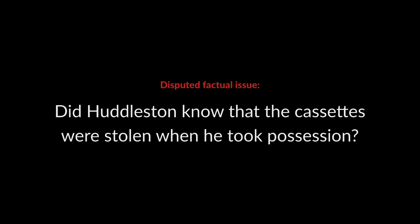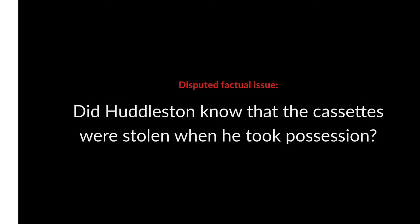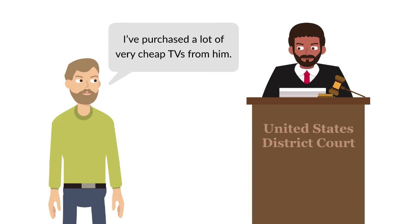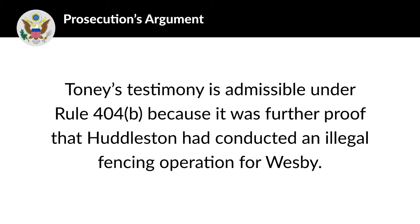Huddleston pleaded not guilty during a jury trial. At trial, the only disputed factual issue was whether Huddleston knew that the cassettes were stolen when he took possession of them from Wesby. In addition to offering proof of that knowledge, the prosecution also offered the testimony of Paul Toney, who had purchased a lot of televisions from Huddleston for well below their market value. The prosecution contended that Toney's testimony was admissible under Rule 404b because it was further proof that Huddleston had conducted an illegal fencing operation for Wesby.